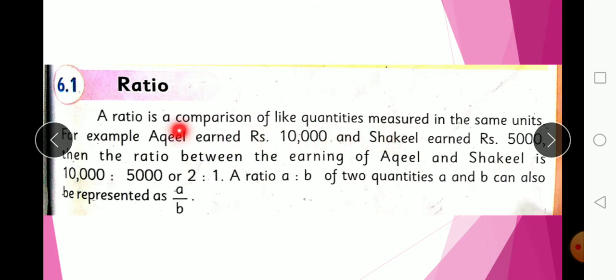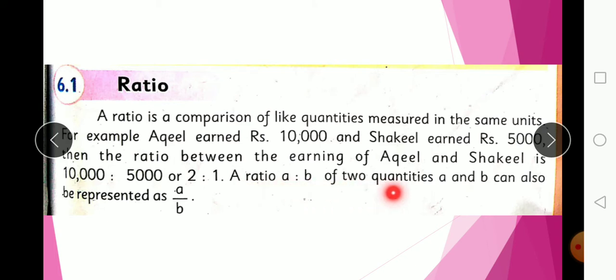First, let's learn what a ratio is. A ratio is a comparison of like quantities measured in the same unit. When you compare two quantities, the comparison is called a ratio. For example, if Akil earns Rs. 10,000 and Shakil earns Rs. 5,000, then the ratio between their earnings is 10,000 : 5,000, or 2:1. A ratio A:B can also be represented as the fraction A/B.